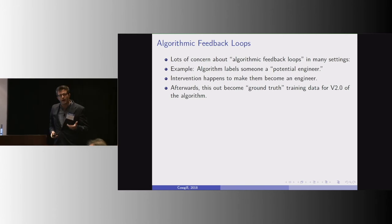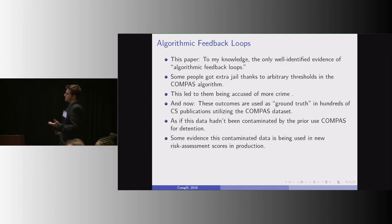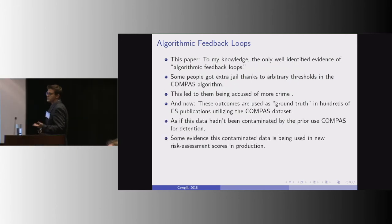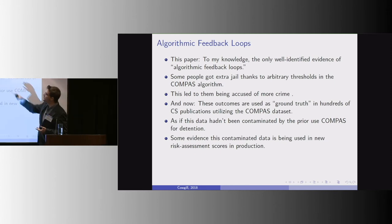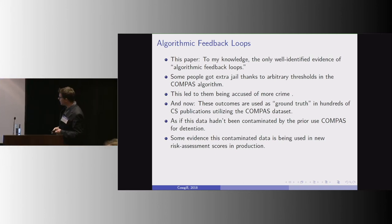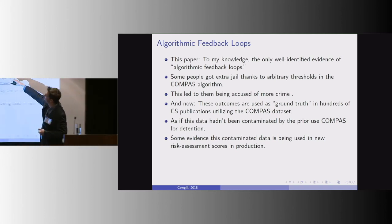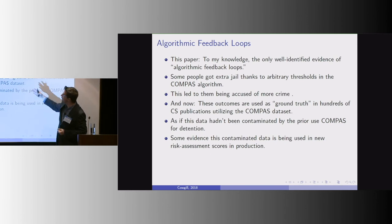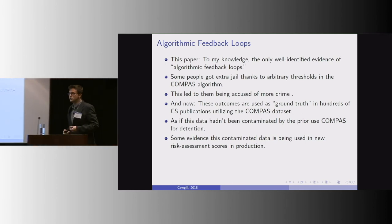And there's a bunch of journalistic writing about this. To my knowledge, this is the first well-identified evidence of an algorithmic feedback loop. So we have people who got extra jail thanks to the Compass algorithm and an arbitrary threshold in how that was implemented.